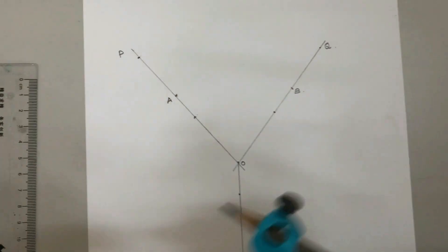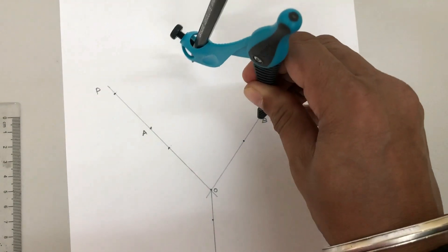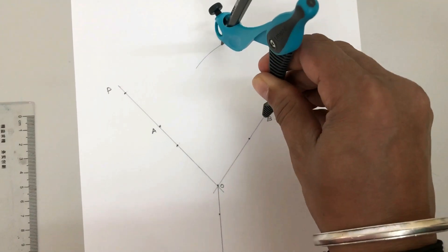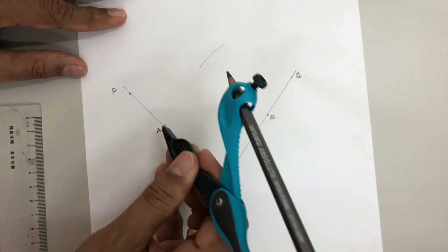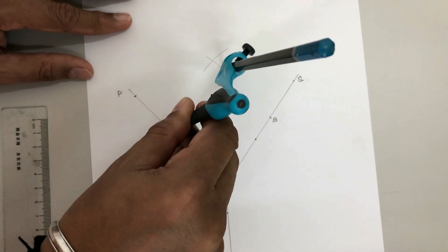And now place it on point B and draw an arc. In the same way, place it on point A and draw an arc.